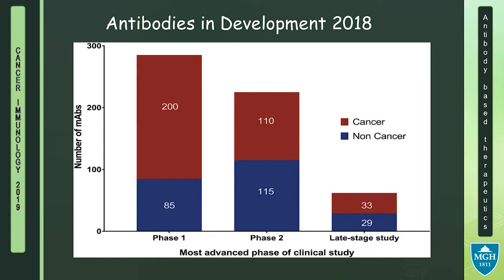This has not really limited our interest in this area. Just looking at a survey of different antibodies in development — a snapshot from 2018 — shows there is still a lot of interest, especially in the phase one group, in developing these antibody-based therapies. This also serves as a reminder that even though we talk about these treatments in the context of cancer, there's a lot of interest in the non-cancer or non-malignant area as well, harnessing the effect of antibodies.